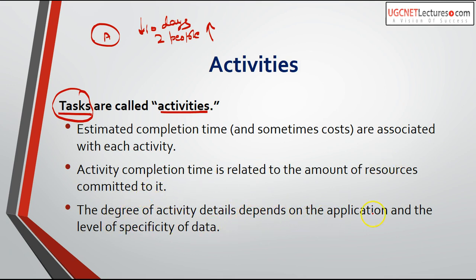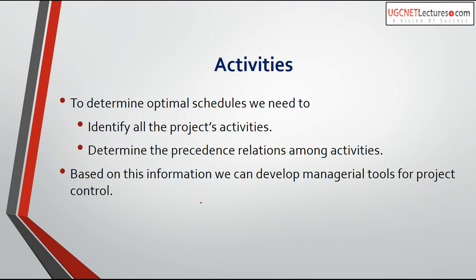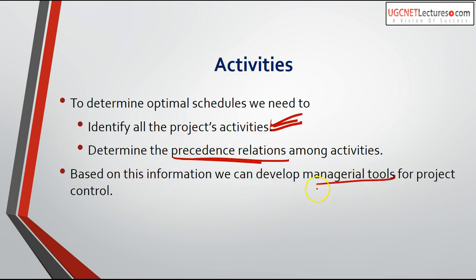To determine an optimal schedule, we need to identify all the project activities. You must clearly declare what activities are required to complete the product. Then determine the precedence relations among activities — which activity depends on which, which activity is the parent of which. Based on this information, we can develop managerial tools for project control. We have some tools for project scheduling.